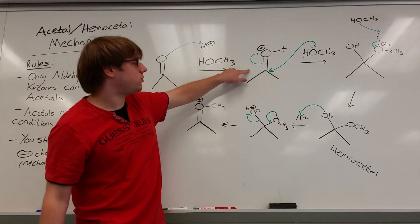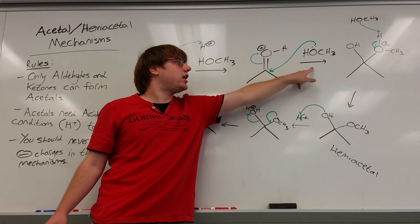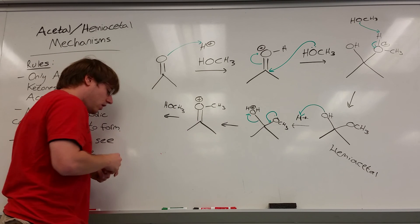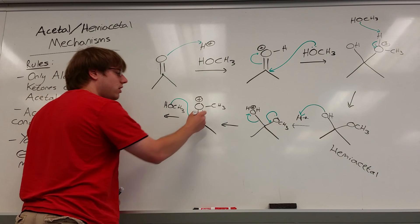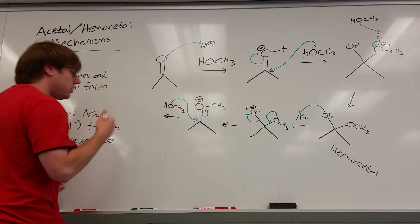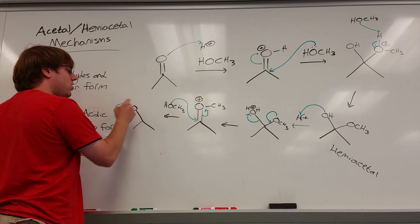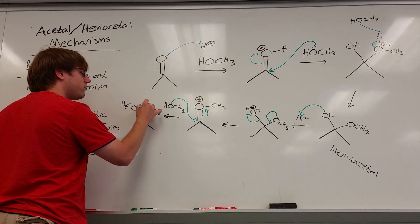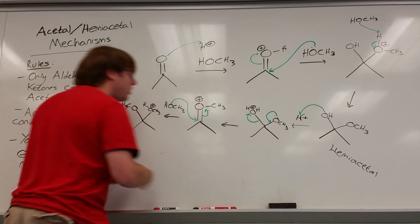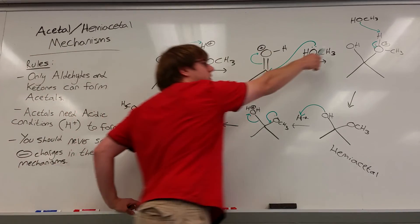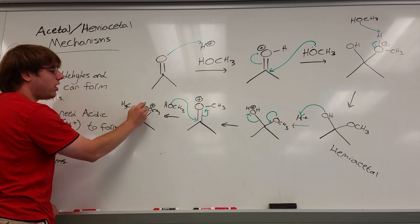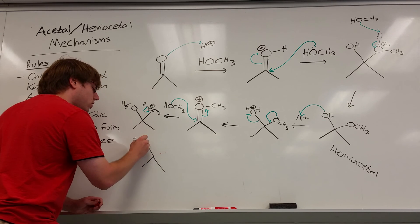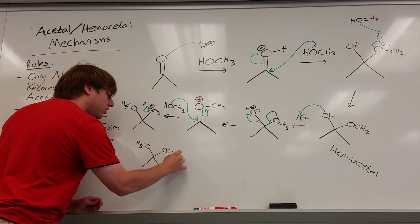Now we have a double bond OCH3-positive — the situation we need. The other HOCH3 comes in with its electrons, attacks the carbon, and swings that double bond up. Now we have a carbon with two OR groups: the original OCH3 and the new OCH3, which is positive because it still has its hydrogen attached. Our very last step is to pull off that proton — the arrow goes from the hydrogen bond to the positive oxygen — and that gives you your full acetal with OCH3 and OCH3 on the same carbon.